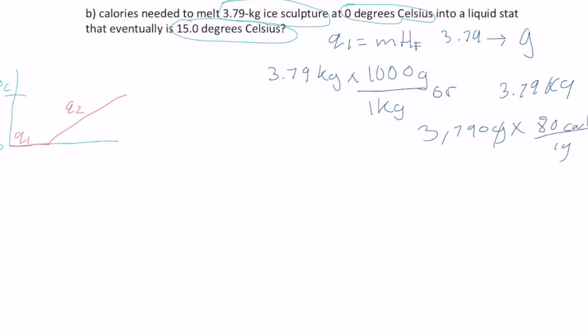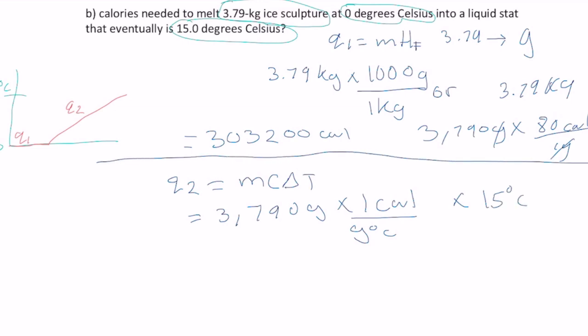So, there's 80 calories per gram, right? If you don't know that, refer to your notes again. They're in there, believe me. They are there. So, 303,200 calories, right? That's the first part. Now, we need Q2. Q2 is M times specific heat times delta T. Hopefully, you know what that stands for already. So, what do we do? Put our 3,790 grams, what we converted earlier from kilograms, times 1 calorie per gram degrees Celsius. And we have our change in temperature. So, our change in temperature is going to be 15 degrees Celsius, right? As before, you multiply across and eliminate what's the same. So, grams and grams cancel out. Degrees Celsius, degrees Celsius cancel out. We get 56,850 calories.